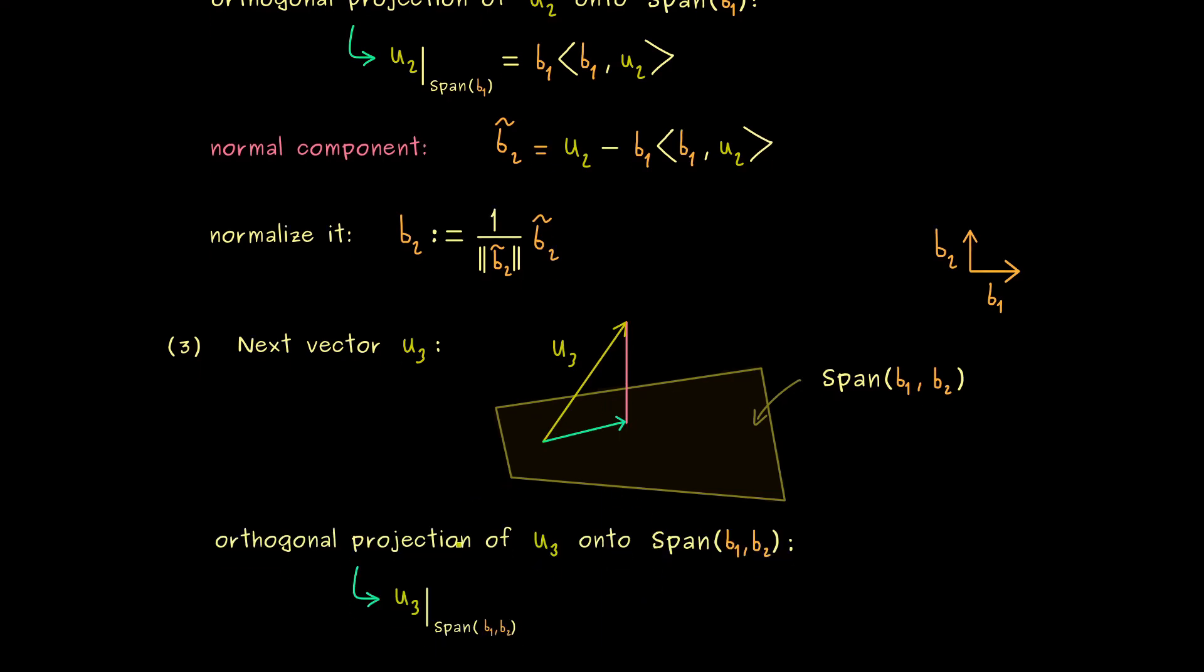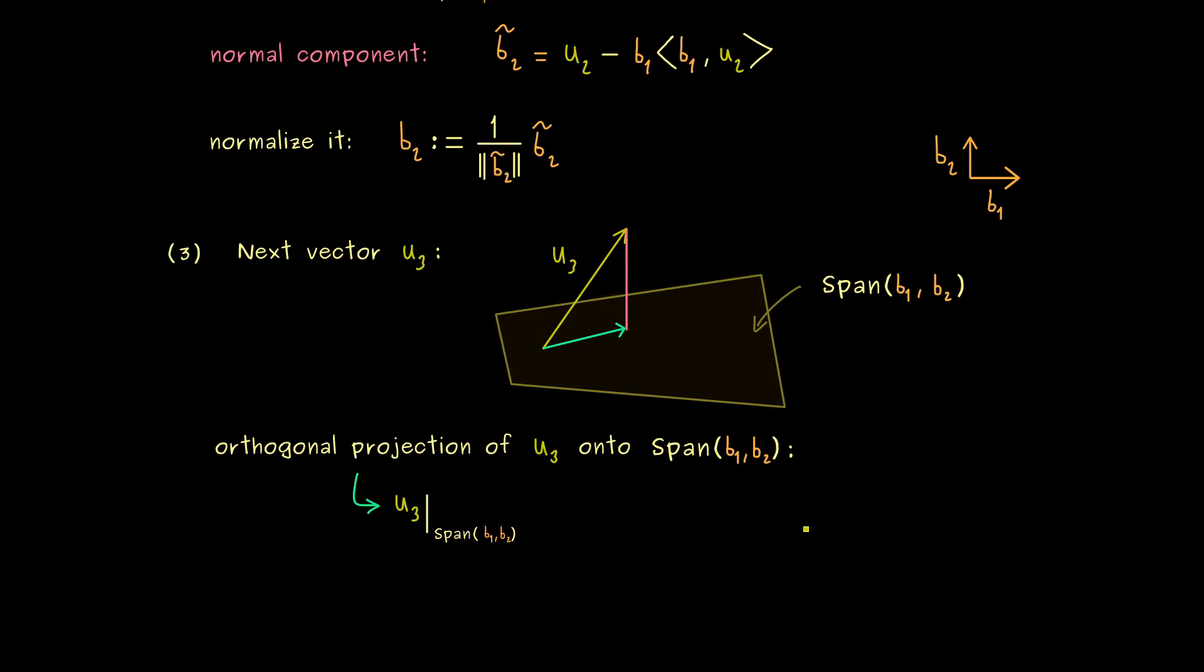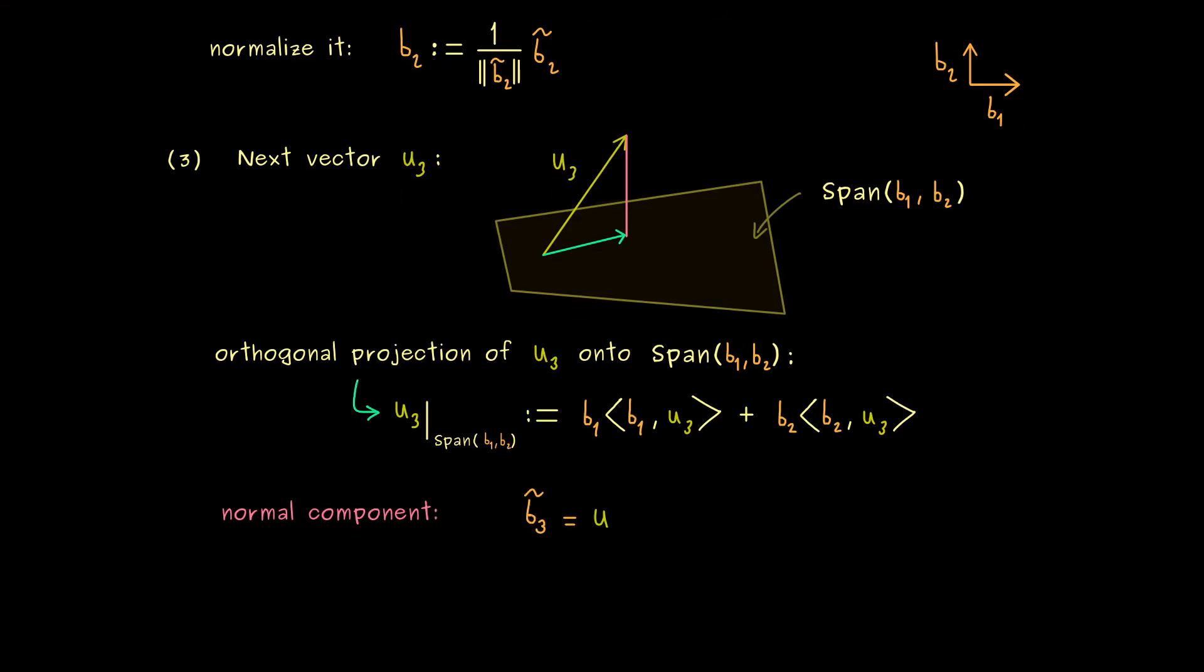And there you see, similarly to before, we can just calculate the orthogonal projection again. And then again we will just take the normal component. Therefore the only question is, how do we calculate the orthogonal projection in this case. And there you should recall that having an ONB makes this calculation really easy. It's just projecting u3 to the first basis vector plus projecting u3 to the second basis vector. So this formula is really nice, simply because we already have an ONB here. But we have the same as before. Actually we want to have the normal component. So our b3 tilde is u3 minus the orthogonal projection. So no problem at all. And then the last step is the normalization again. So also here in the end we get our new basis vector b3.